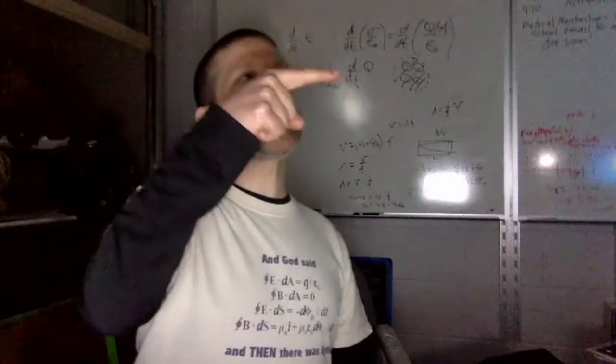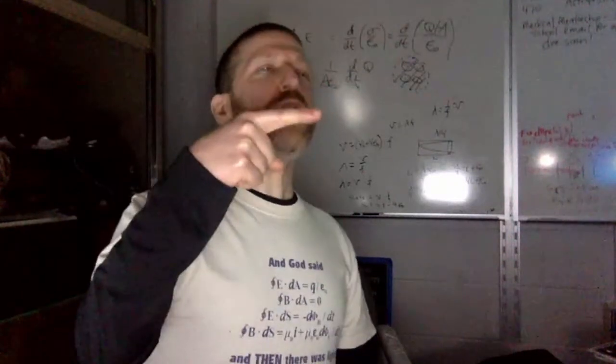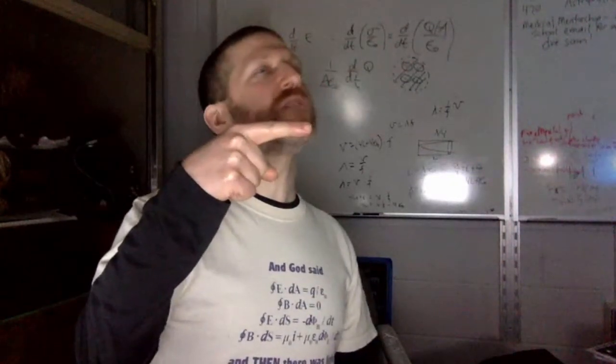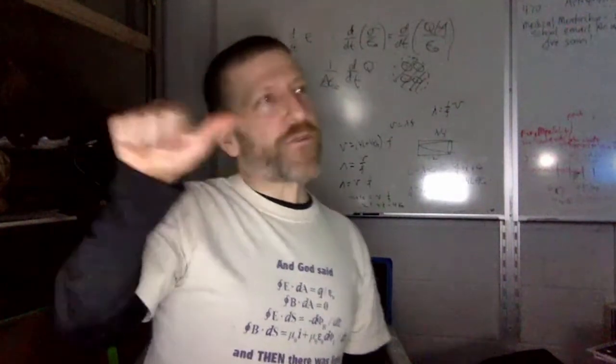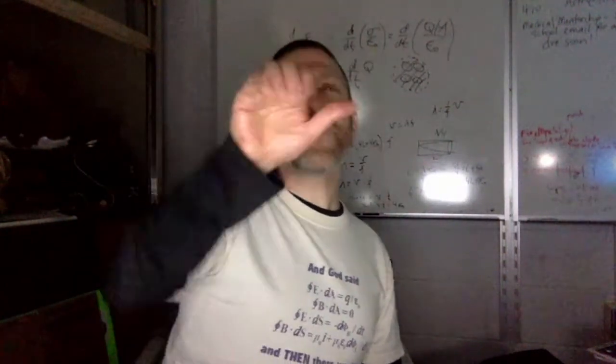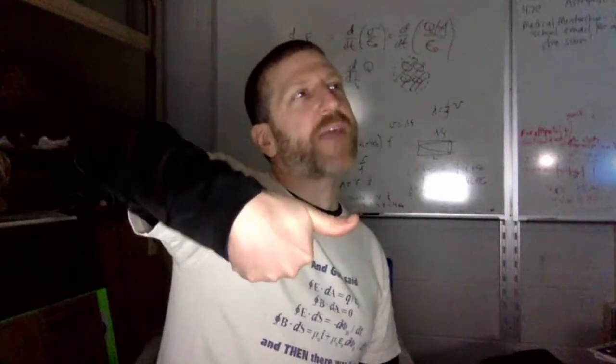If the current in a wire is flowing this way, how do you figure out what the magnetic field looks like around that wire? You put your thumb in the direction of the current through the wire, and your fingers curl like the magnetic field.